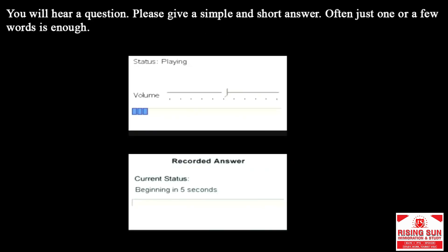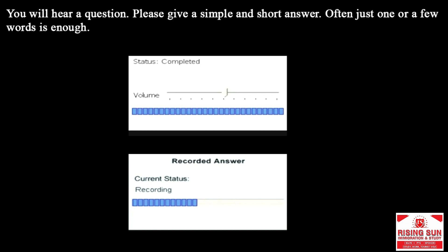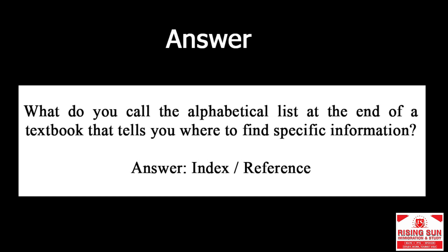What do you call the alphabetical list at the end of a textbook that tells you where to find specific information? Answer: index, reference.